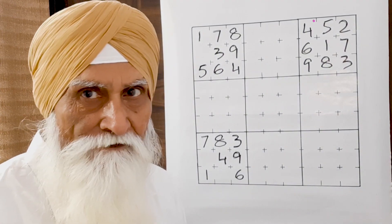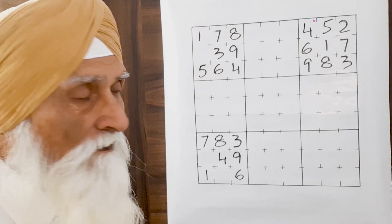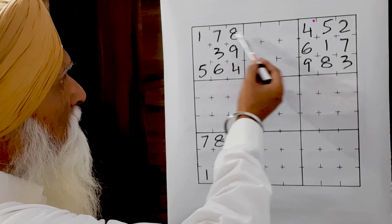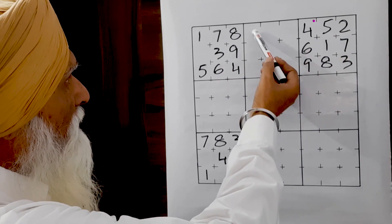So what does the child have to do? First of all, the child has to study this row. One, two, what he needs is three.